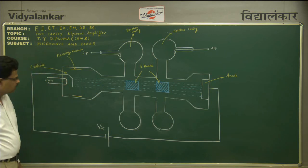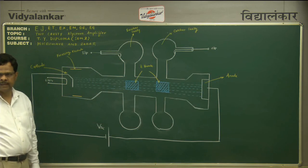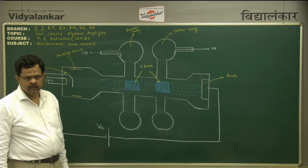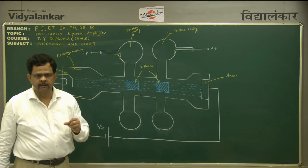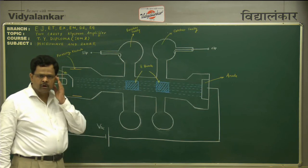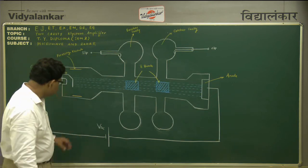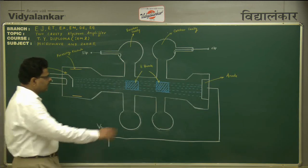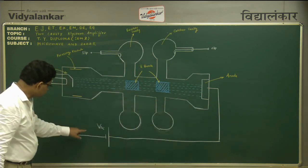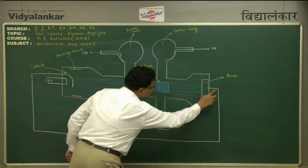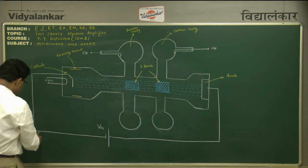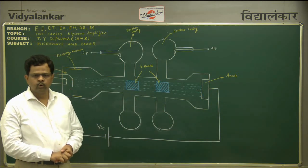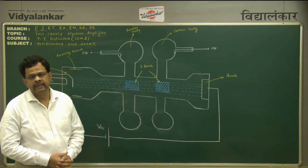Inside the cathode we have a coil, and to this coil we apply 6.3 volt AC supply. When we apply this supply, the barium oxide heats up and produces a large number of electrons. We also apply an external DC voltage between anode and cathode such that the anode is positive with respect to the cathode. Normally the value of this DC voltage is in the range of 250 volt to 500 volt DC.